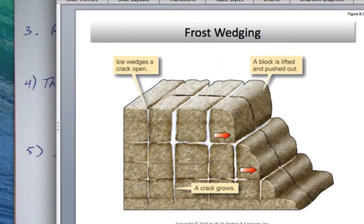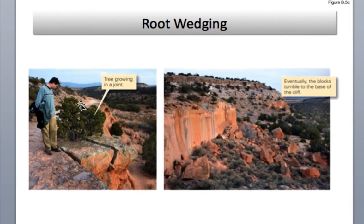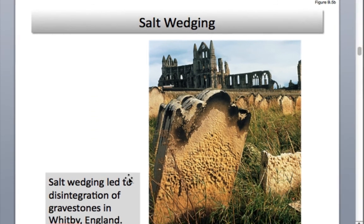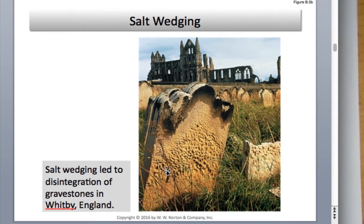Going back to our PowerPoint, we see frost wedging illustrated. Here a bush's roots are growing into and coming out of rock — eventually it's going to spall this piece of rock off. They'll tumble down and make a talus slope. And here's salt wedging that led to disintegration of gravestones in England.